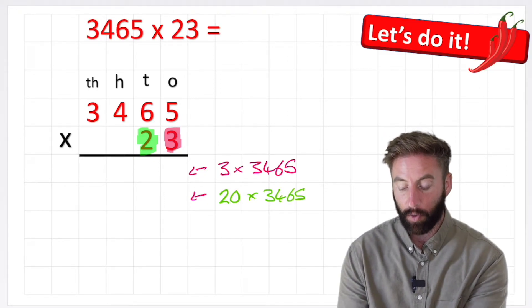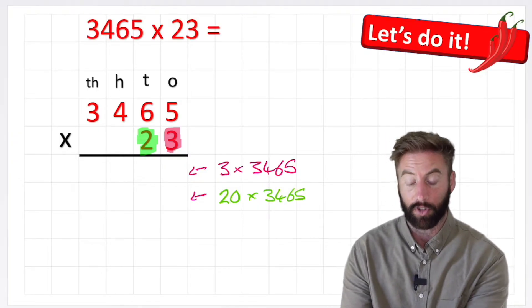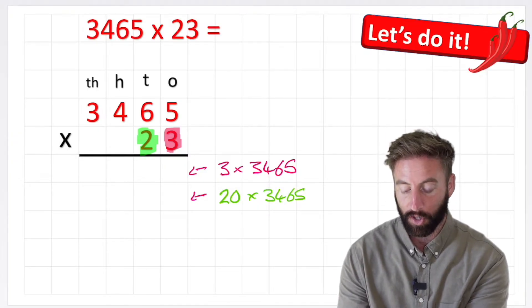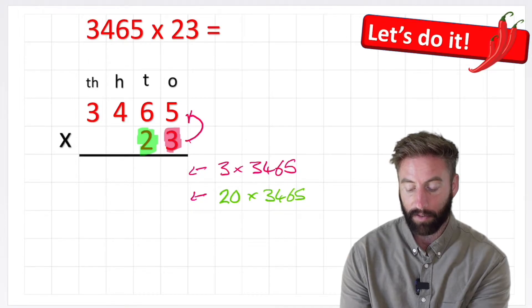So let's work on our first row, first of all multiplying 3 times 3465. But again we're going to do it in small chunks. Our first chunk is going to be 3 times 5.